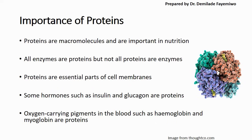Proteins form an essential part of the cell membrane — you will see this when we get into chapter 4 and discuss cell membranes and transport, where proteins are used to form transport channels within the cell membrane to allow certain molecules to pass through. Some hormones such as insulin and glucagon are proteins, which are very important in controlling blood glucose concentration — something you will encounter in chapter 14 on homeostasis.